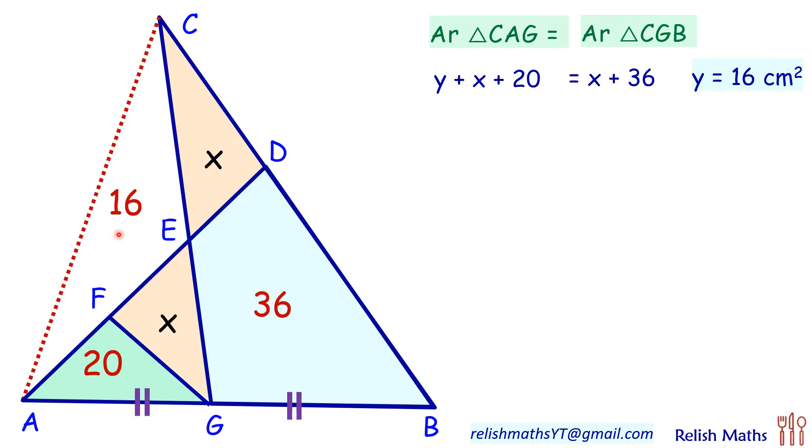So here we have replaced Y with 16. Let's do one more construction and join DG. Let's call this area as Z and thus here the remaining area will become 36 minus Z.